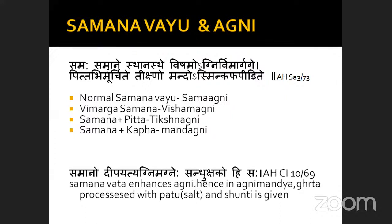Samana Samane Sthana — when Samana Vayu is in its normal Sthana, it is called Samagni. If Samana Vayu moves out from its Sthana, that is, Vimarggamana happens, that will lead to Vishamagni. Pitta purvam moorchite Teekshna — when Samana Vayu involves with vitiated Pitta, that will lead to Teekshnaagni. And Mando asmin Kapha peedithe — if it comes in contact with vitiated Kapha, it will lead to Mandagni.